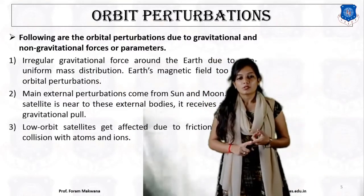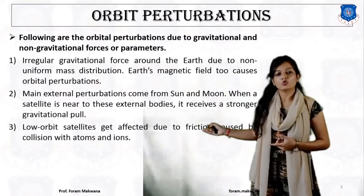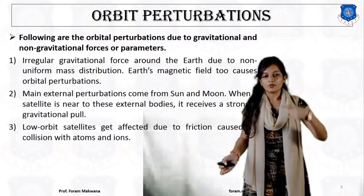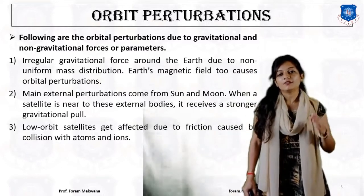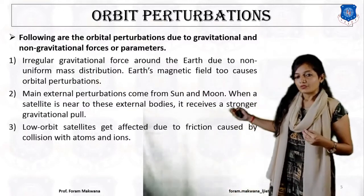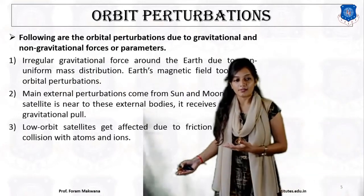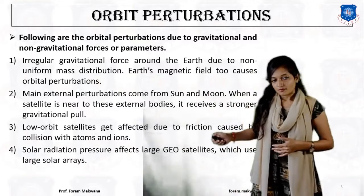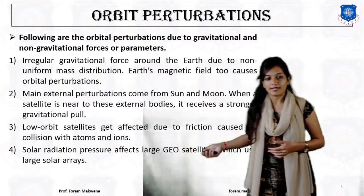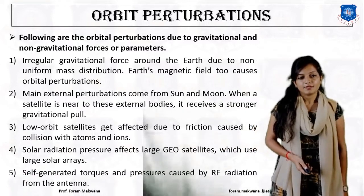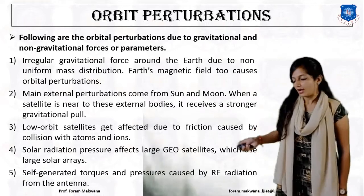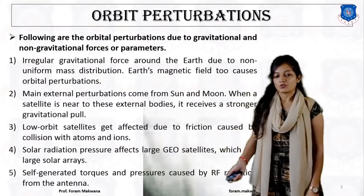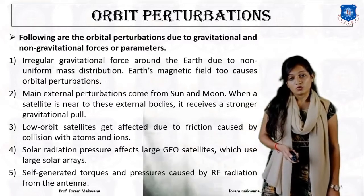Third, the most affected orbit due to friction is the low earth orbit (LEO), because it is nearest to the surface of the earth at a distance of 100 to 5000 kilometers. The friction caused by the earth's atmosphere and collision with atoms and ions causes deviation of the low earth orbit. Fourth, solar radiation pressure affects large geostationary satellites that use large solar panels. Additionally, self-generated torques and pressure caused by RF radiation from the antennas mounted on the satellite will also cause orbital perturbation.